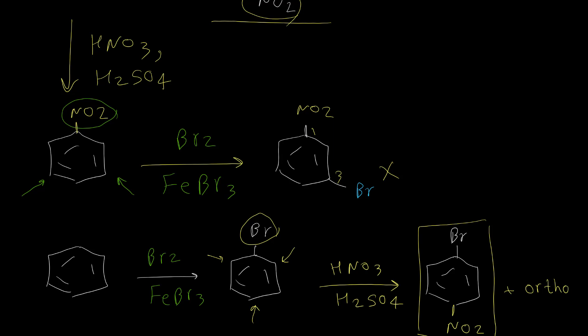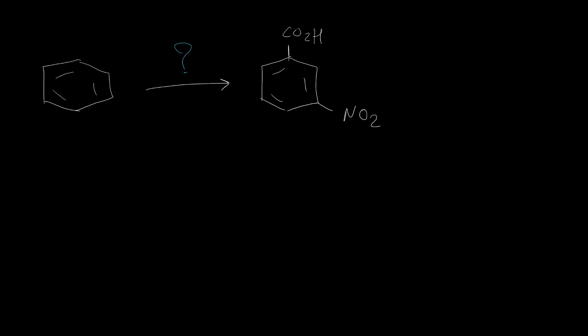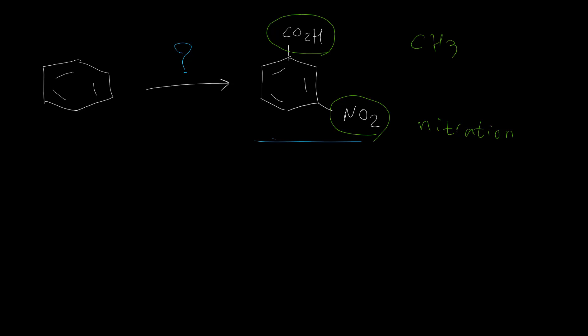Let's have another example. In this problem we would like to synthesize meta-nitrobenzoic acid. For this reaction we actually have three steps: a nitration reaction, and we also need to put a CO2H carboxylic acid group. Keep in mind that we cannot put this group directly — first we have to put a CH3 or other alkyl group, then we need to oxidize it to carboxylic acid. So we have one Friedel-Crafts reaction and one oxidation reaction.